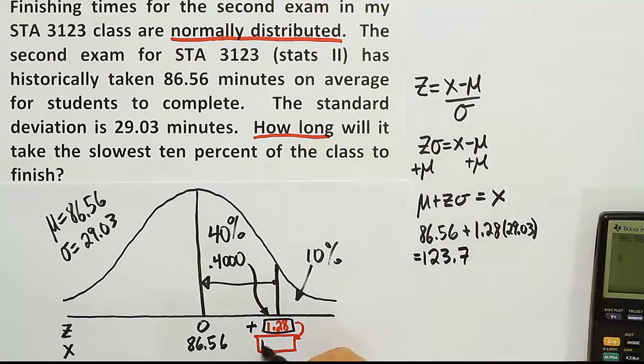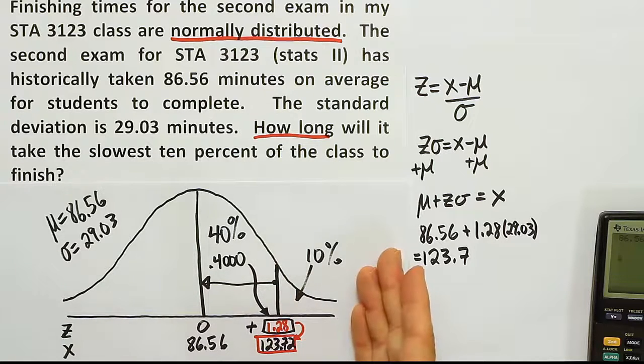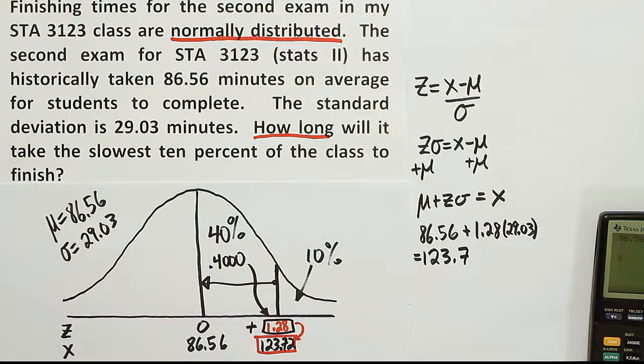So that's the finishing time here: 123 point actually goes out to 72 if you want to keep two decimal places there. So that's basically like 124 minutes. So a little more than two hours. That would be the cutoff line for the slowest 10% and the remaining 90% of the students. So if you take longer than 123.72 minutes to finish the exam, you're going to be in the slowest 10% of the class at that point.